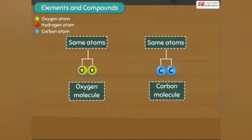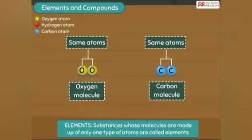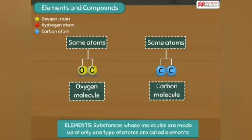The molecules of oxygen and carbon are made up of only one kind of atom. All such molecules that are made up of only one type of atom are called elements.